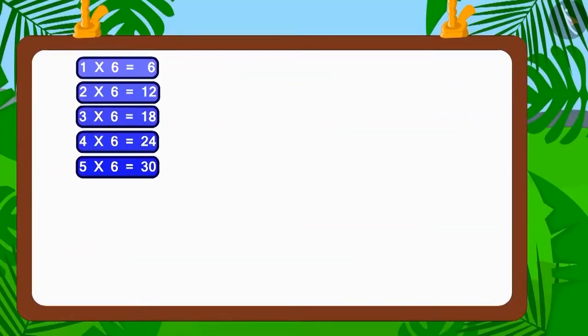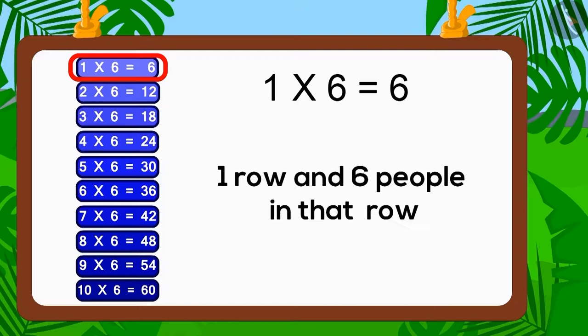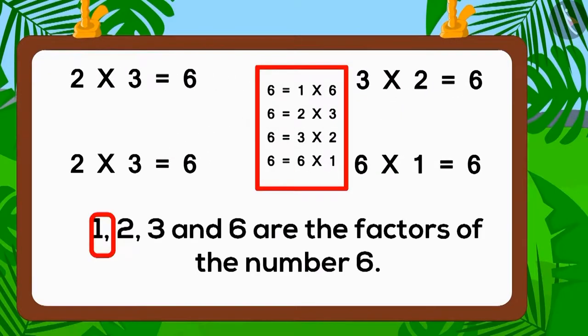Now, let's look at the table of six. Does the number six appear in the table of six? Yes. One multiplied with six is six. Therefore, six is also the factor of number six. So, one line and six people in each line is a good option. Today, we saw that one, two, three and six are the factors of the number six.